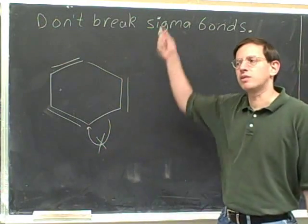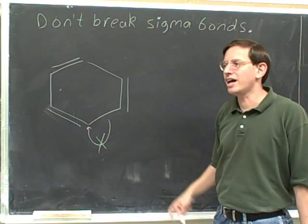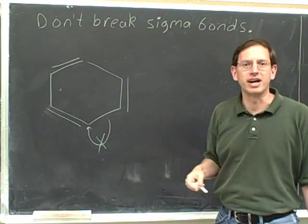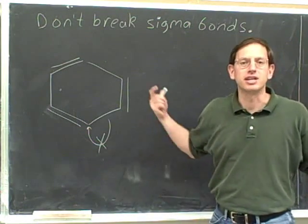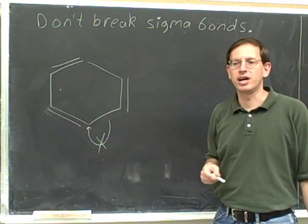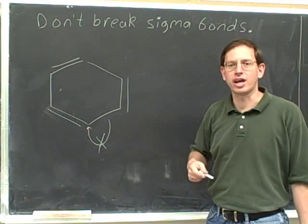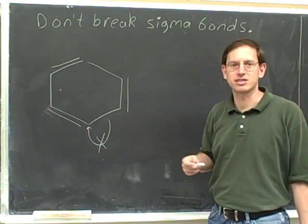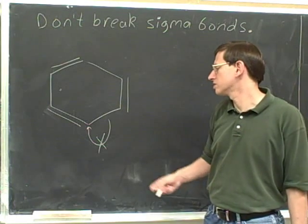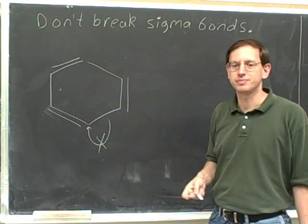Basically, what this comes down to is that you cannot have the tail of an arrow on a single bond when you're drawing electron-pushing arrows for resonance. When you're doing resonance structures, you can't have the tail on a single bond.